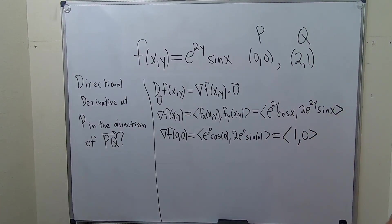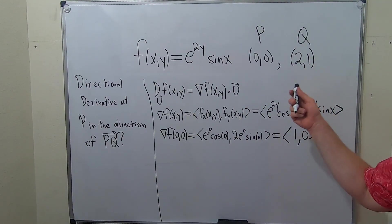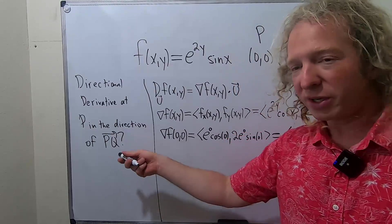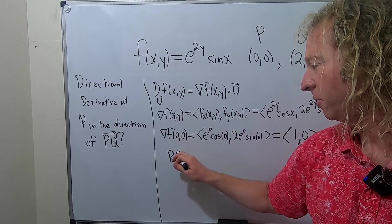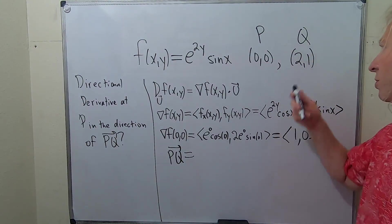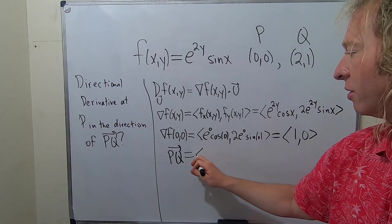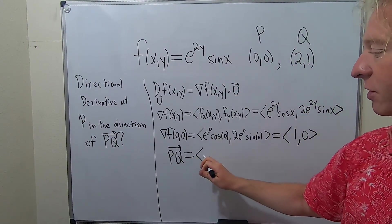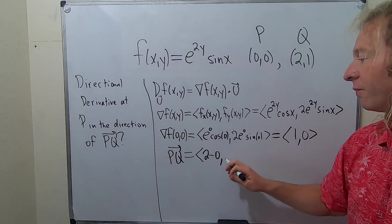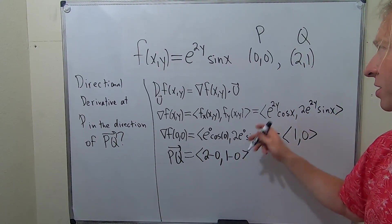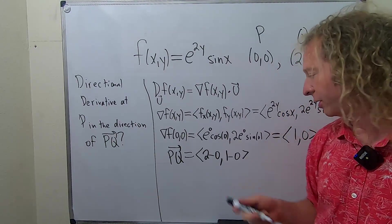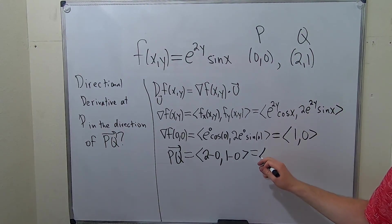Now, we just have to find our unit vector. We want to find the directional derivative of P in the direction of this vector. The vector PQ, you form it by using these two points. It's terminal minus initial. So, it'd be 2 minus 0, subtracting the x-coordinates, and then 1 minus 0. You always do terminal minus initial. This is the terminal point. This is the initial point. This is equal to the vector 2, 1.